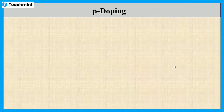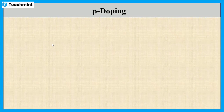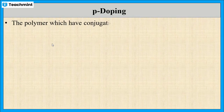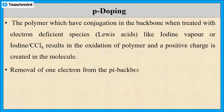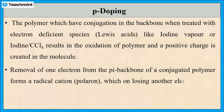Now let us see the conduction of polyacetylene. Any polymer in the neutral state acts as an insulator. But whenever it is doped with either an oxidizing or a reducing agent, it will possess positive or negative charge and enables conductivity. In P-doping, the polymer is treated with Lewis acids, which are electron deficient, resulting in the oxidation of the polymer and creating a positive charge in the molecule.